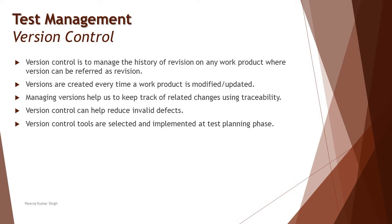Version control can also help reduce invalid defects — defects that are reported but rejected by the development team. For instance, when I was testing build version 1.5 and found a defect, I reported it to the developer. But the developer was working on version 1.6 and tried reproducing the defect there. He said no defect was found — it is working fine. The testing team believes it is a defect, but the development team justifies that the defect cannot be reproduced and they see no problem.